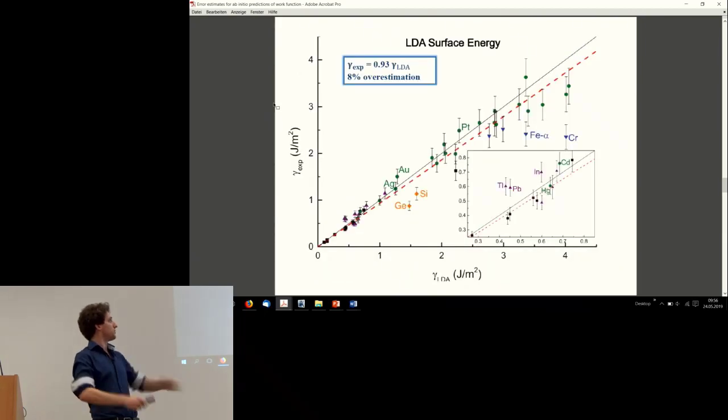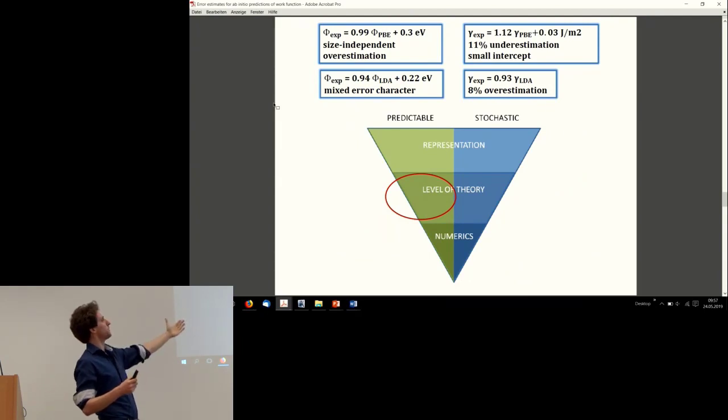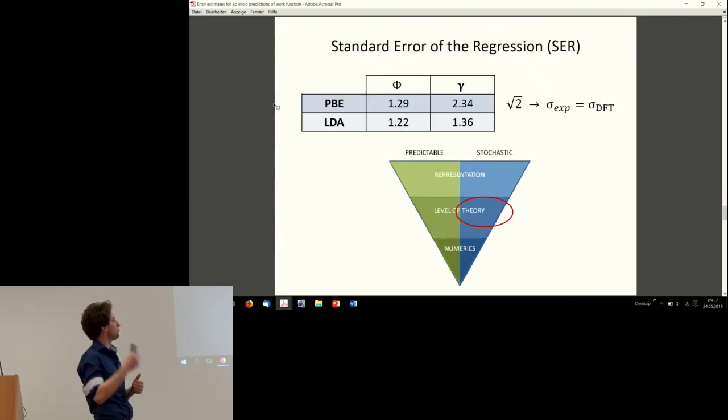If you do it you end up with these kind of figures. You have your regression line—like I said that's interesting. You can see typical LDA overestimation, over binding. Rounding them all up, we end up with our estimation of the predictable parts of our level of theory. You can get typical things like underestimation for PBE, overestimation for LDA. The work functions for PBE have a nice error character—you just have to add 0.3 electron volts to them and then you correct for a large part of the error already. This is more of a practical tool. It allows you to correct what you have calculated to more closely approximate the experimental value.